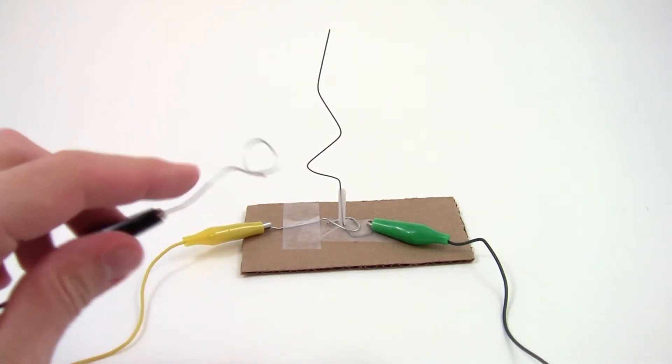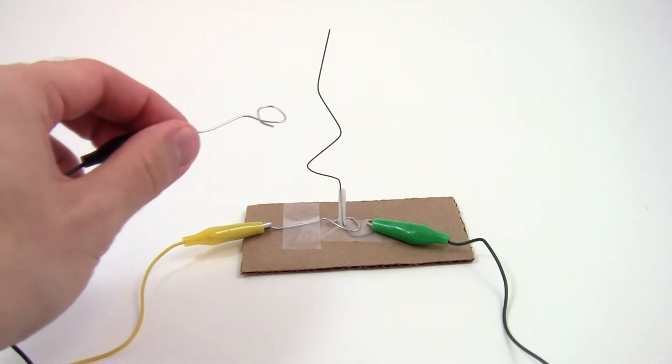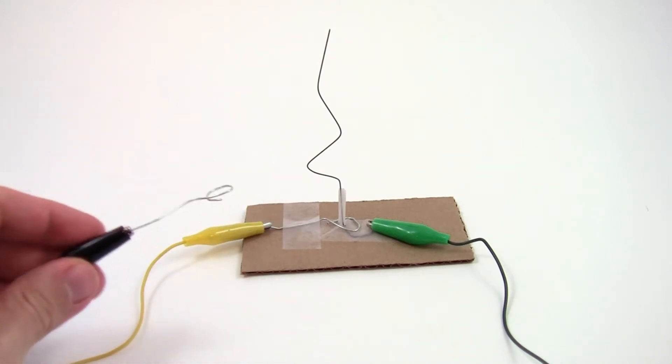The goal is to take this paper clip, which has been bent into a loop, and guide it down along this bendy piece of wire until I can touch the paper clip at the bottom.